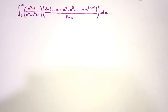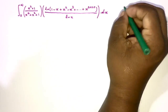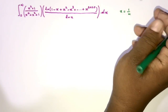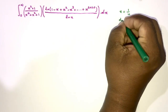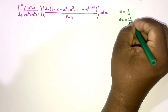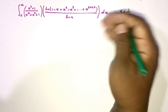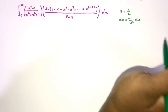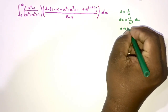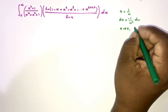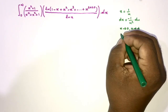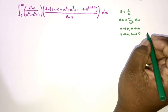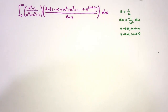First, I am going to take a substitution. If we take x equal to 1 over u, then differentiating gives dx equal to minus 1 over u squared du. We should change the boundaries: when x approaches 0 (lower boundary), u approaches infinity, and when x approaches infinity (upper limit), u approaches 0.